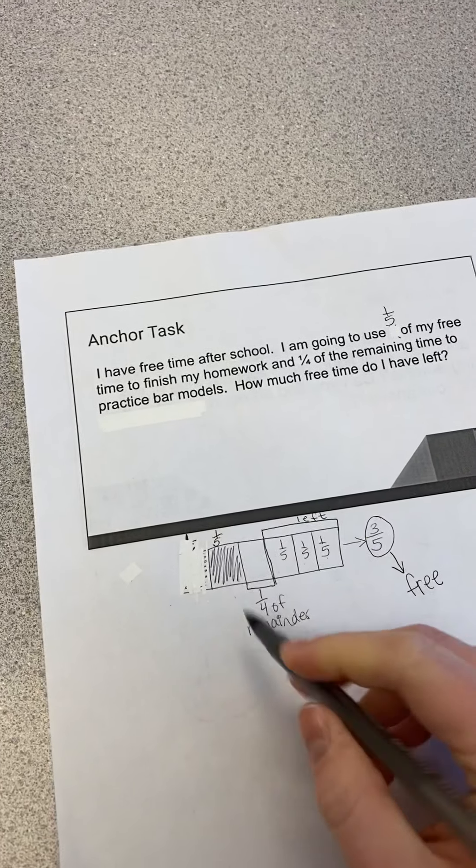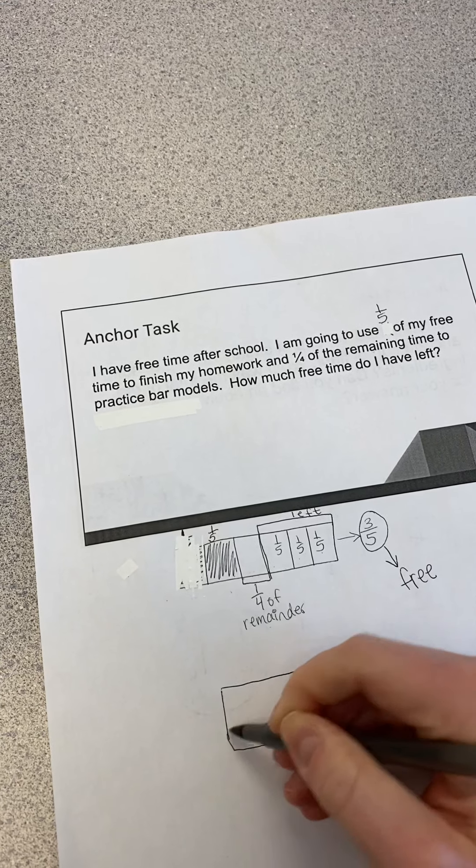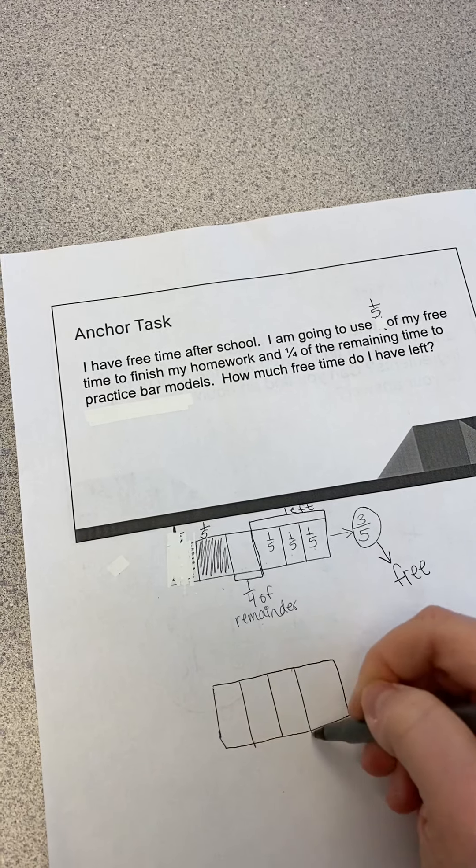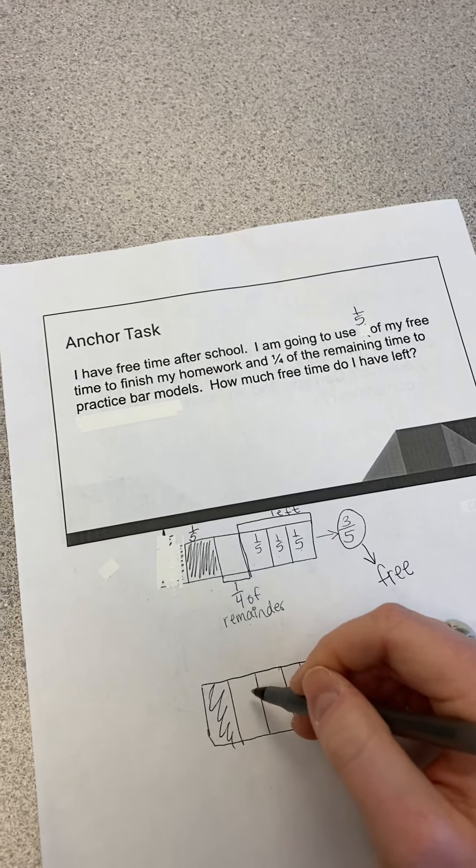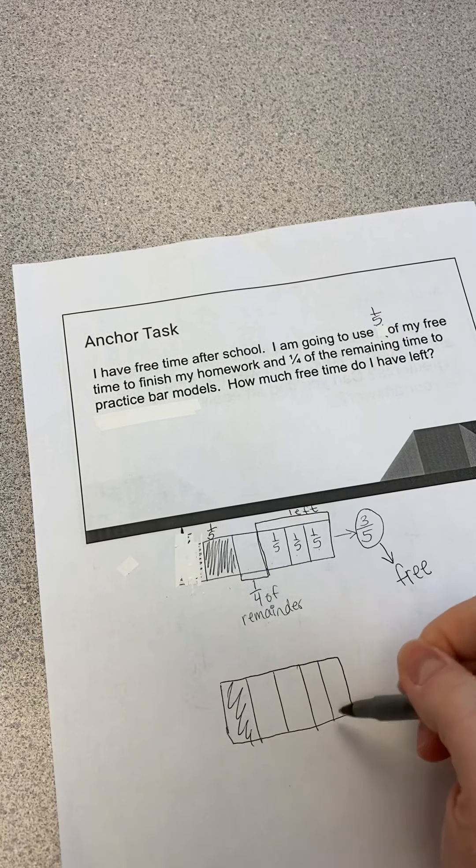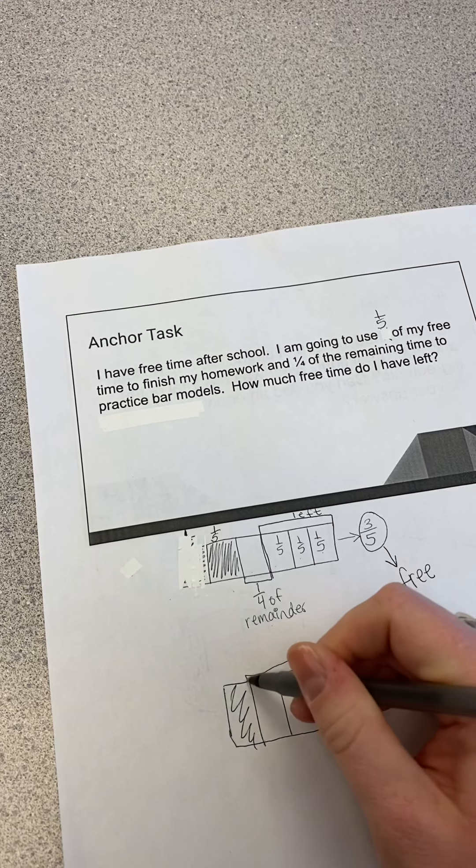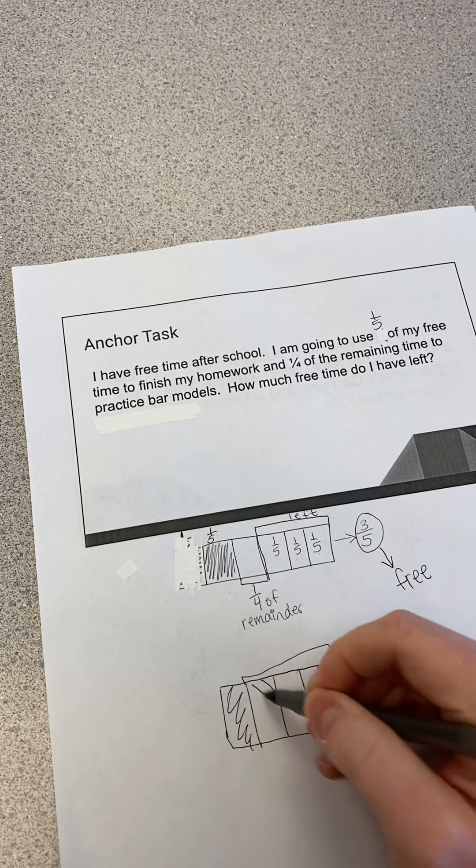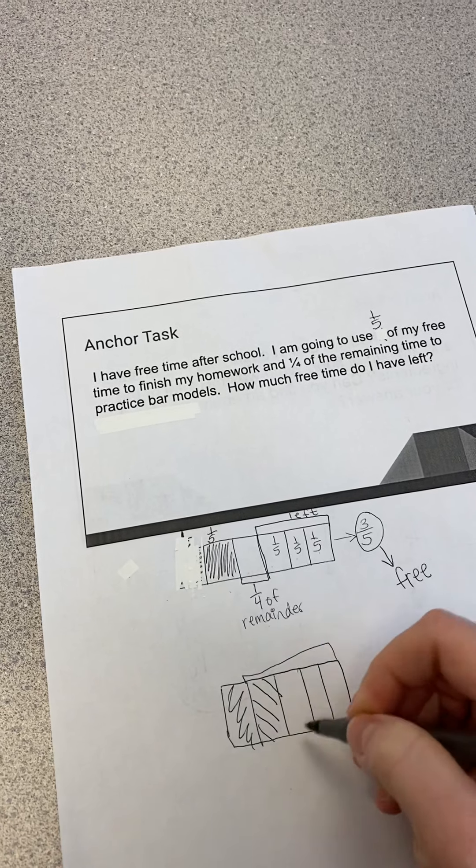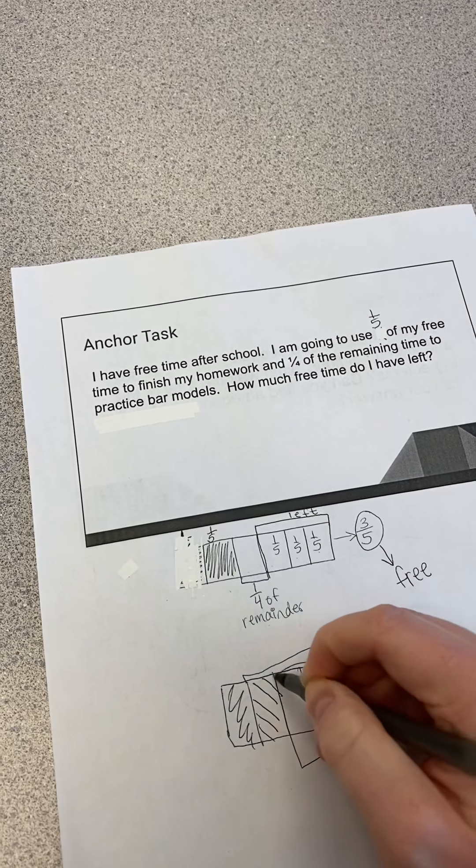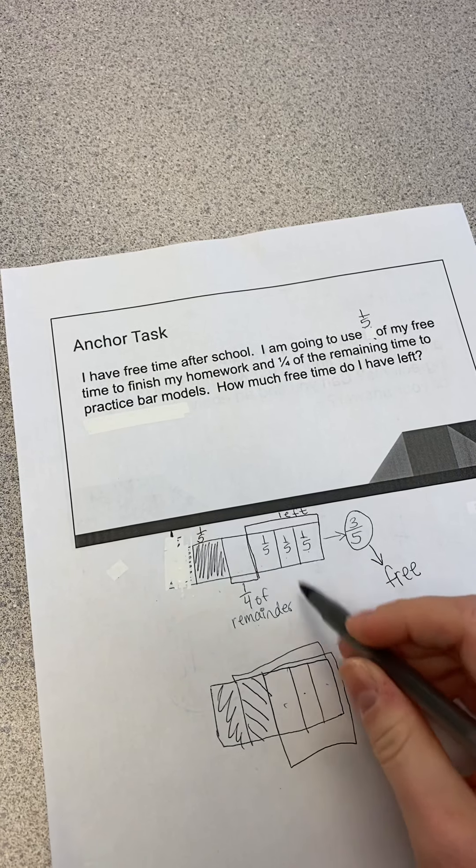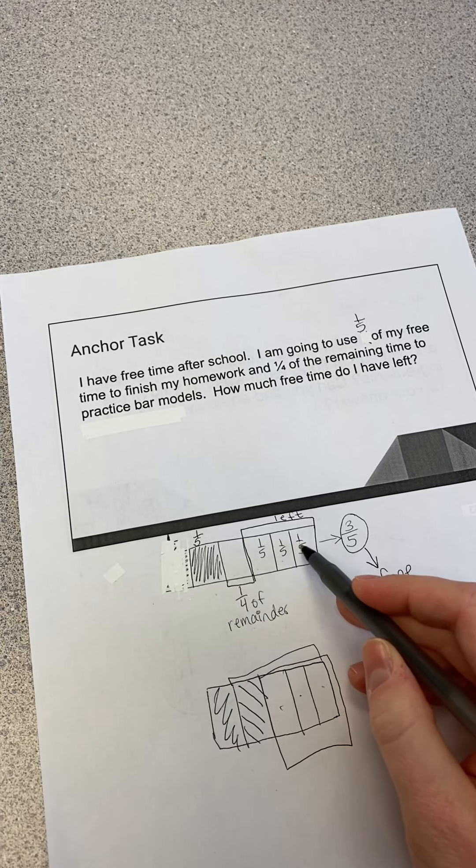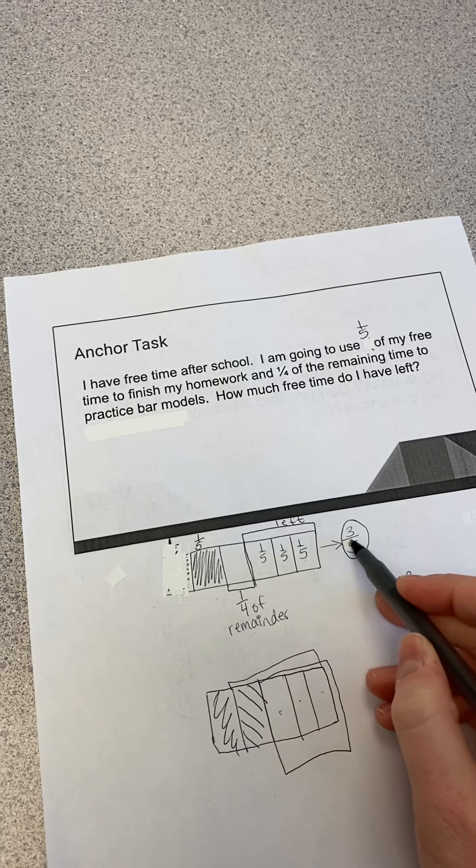So again, I started with a whole fraction bar and I split it into five parts. One-fifth of that was for my homework. One-fourth of the remaining time. So now I have four pieces that are not shaded in. One-fourth of that is for bar models. And then what is left is my free time. And I have three pieces of my bar left. And each one of those is one-fifth, and so one-fifth three times is three-fifths.